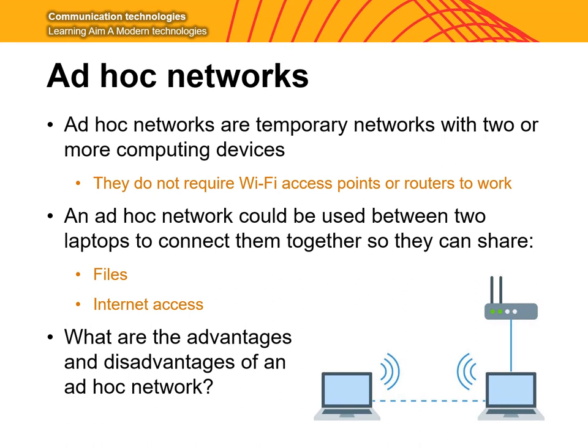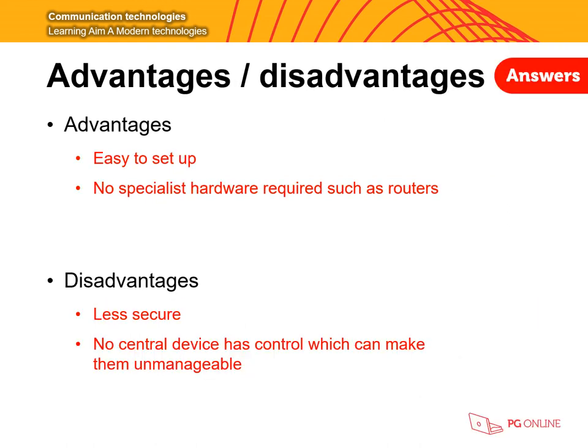There are many advantages and disadvantages of using an ad hoc network. One advantage is that it's easy to set up — we don't require expert technical knowledge, which could save money on hiring technicians or expert staff to install the network. We also don't need specialist hardware such as a router, which means we don't have to invest money in buying that hardware, freeing up funds for other items.